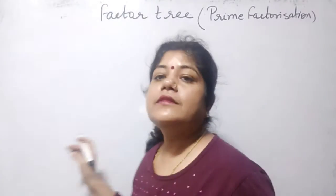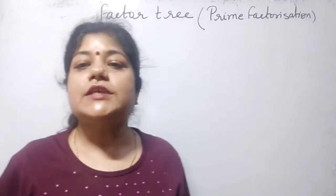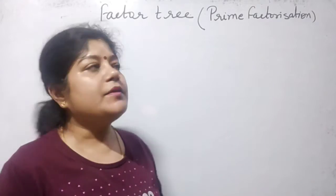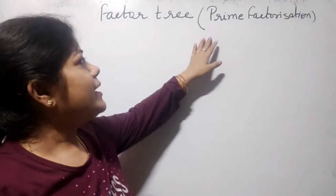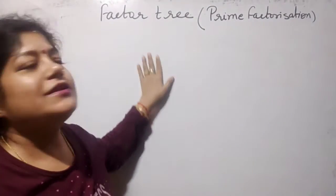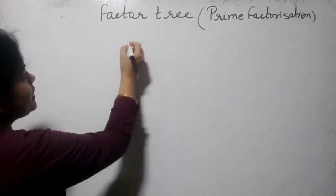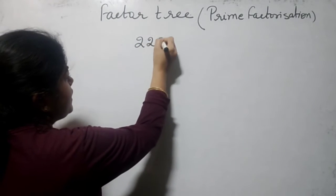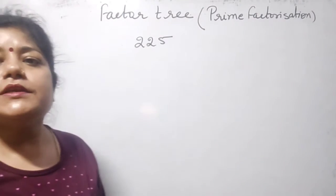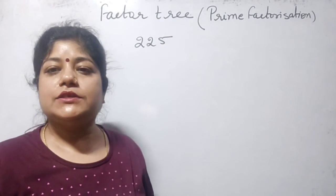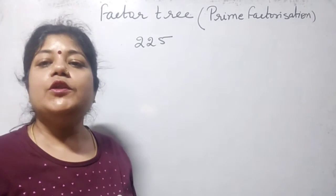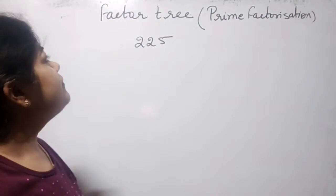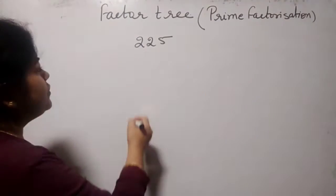In class 10th, in the chapter Real Numbers, the second topic we find in our book is prime factorization, that is, factor tree. For example, if any digit is given and we have to find its prime factorization, how will you draw the prime factor tree for that?